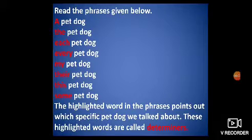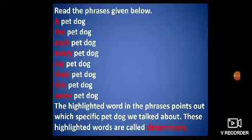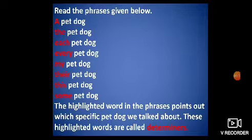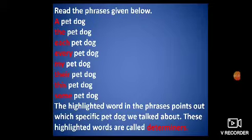Now some phrases are in front of you. Read the phrases given below: a pet dog, the pet dog, each pet dog, every pet dog, my pet dog, their pet dog, this pet dog, some pet dog. The highlighted word in each phrase points out which specific pet dog we are talking about. These highlighted words are called determiners.